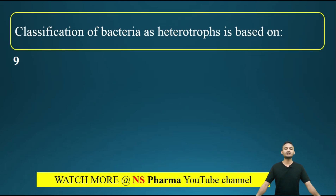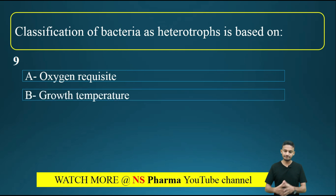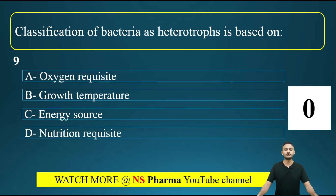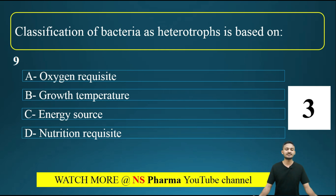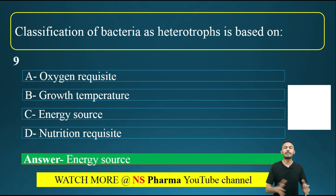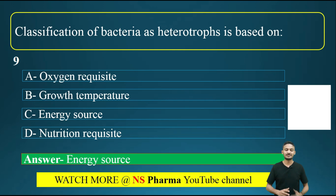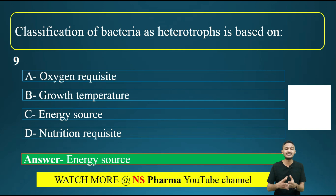Question number 9: classification of bacteria as heterotrophs is based on? Options are: option A, oxygen requisite; option B, growth temperature; option C, energy source; option D, nutrition requisite. The correct answer is option C, energy source. Heterotrophs are organisms that eat other plants or animals for their energy, so the basis is energy source.